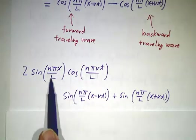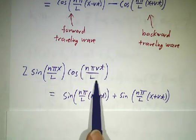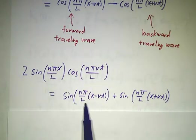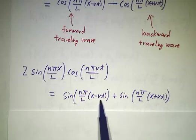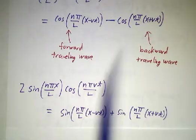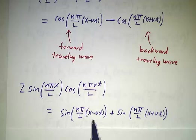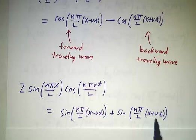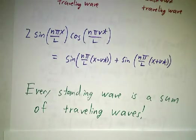Likewise, if we had a sin n pi x over L times cos n pi vt over L, it's the same sort of thing, only instead of having a difference of cosines, we have a sum of sines. But still, one term involving x minus vt, that's a forward traveling wave. One term involving x plus vt, that's a backwards traveling wave. So every standing wave is a sum of two traveling waves.